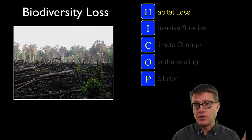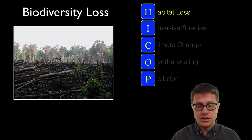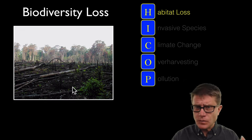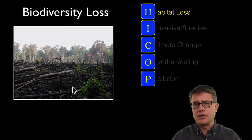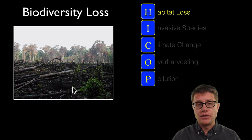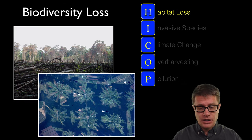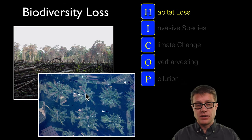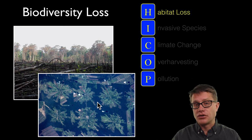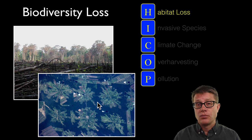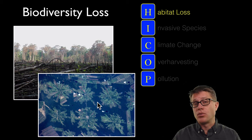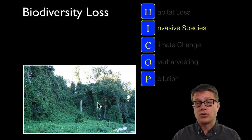Habitat loss is the first big impact on biodiversity. So deforestation — when we are cutting down those rainforests and planting crops. Right here we are growing soybeans. This is looking from above where we used to have a tropical rainforest. We are reducing that diversity and replacing it with one simple crop.